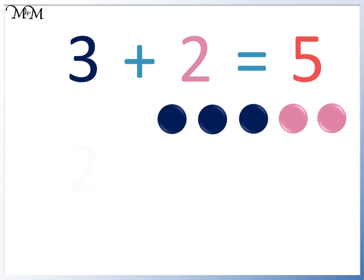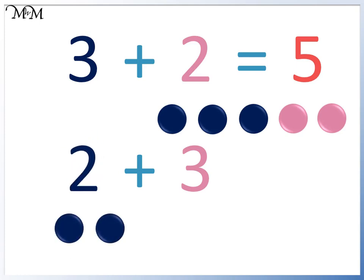Here is 2 plus 3. It is the same sum, but the numbers 2 and 3 are in a different order. Here is 2: 1, 2. And here is 3: 1, 2, 3.